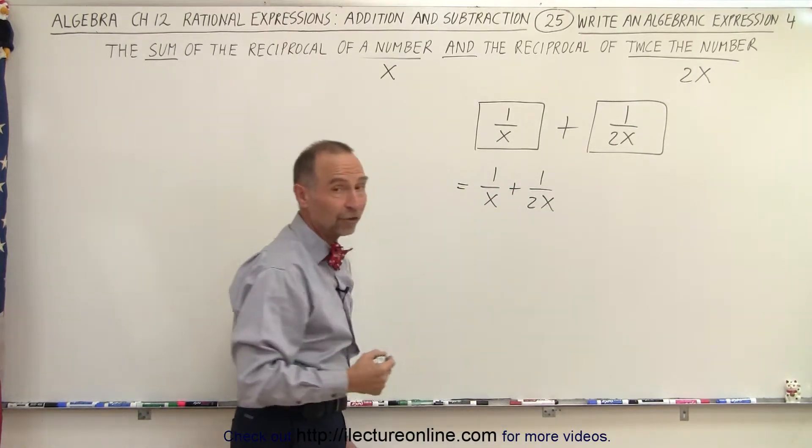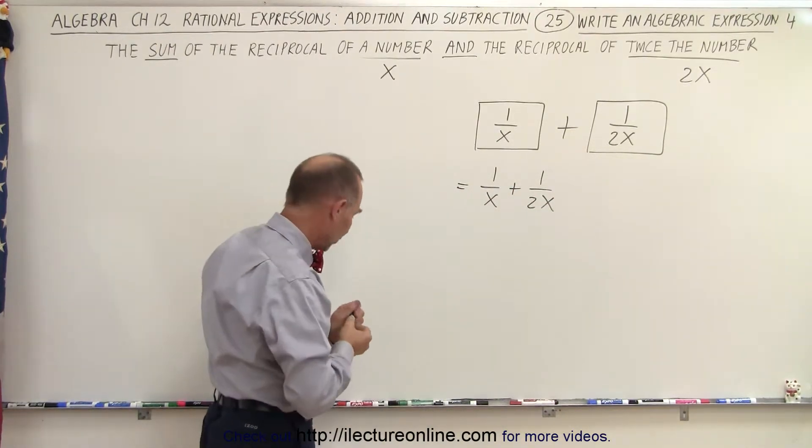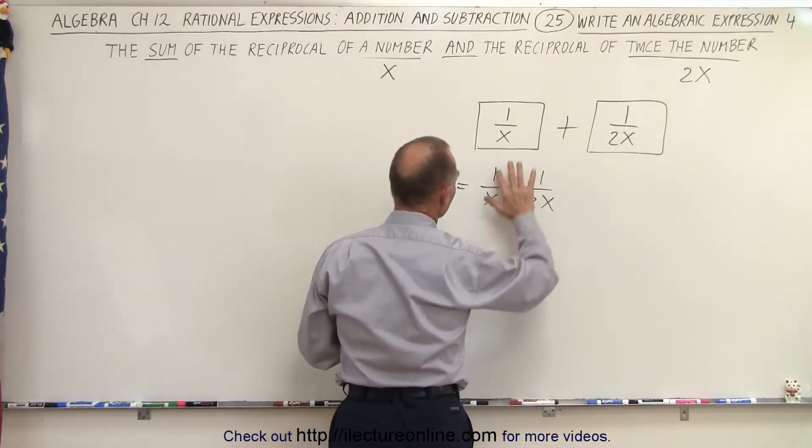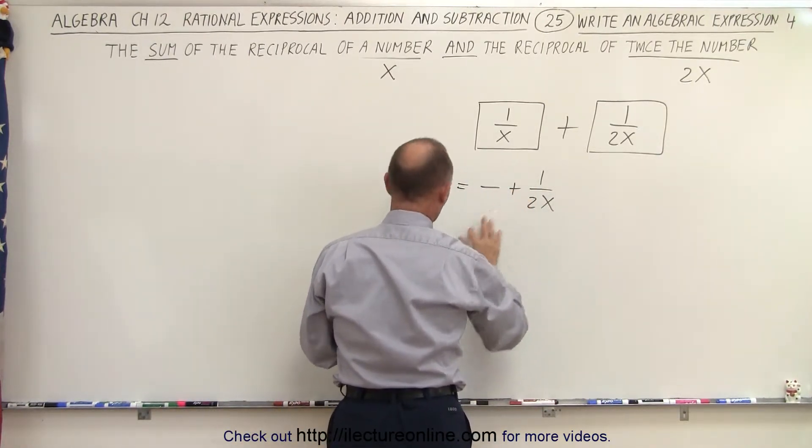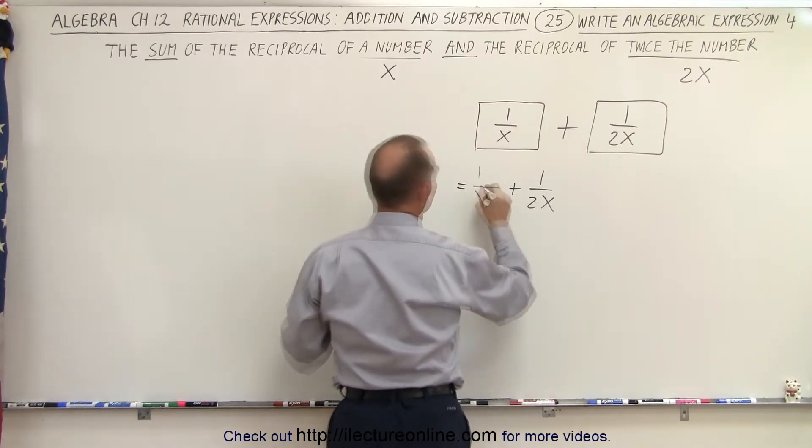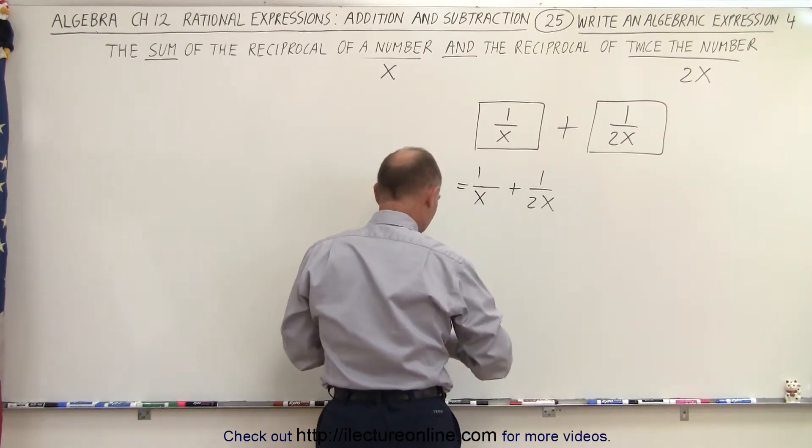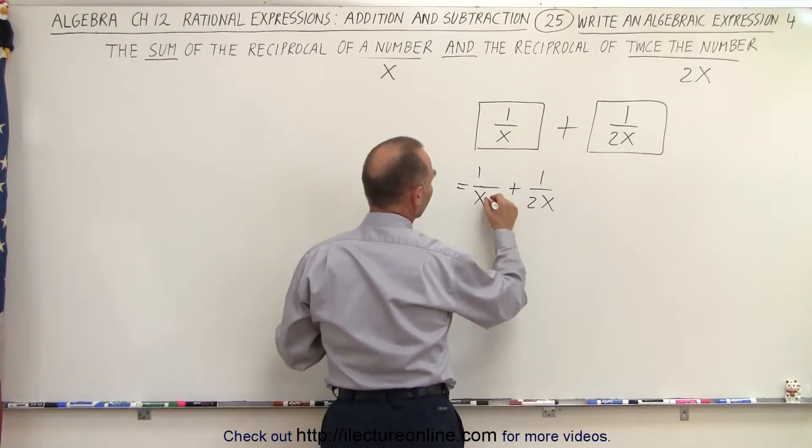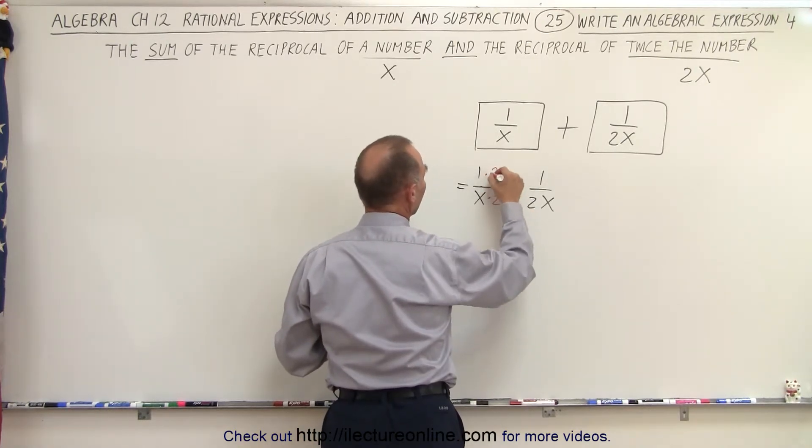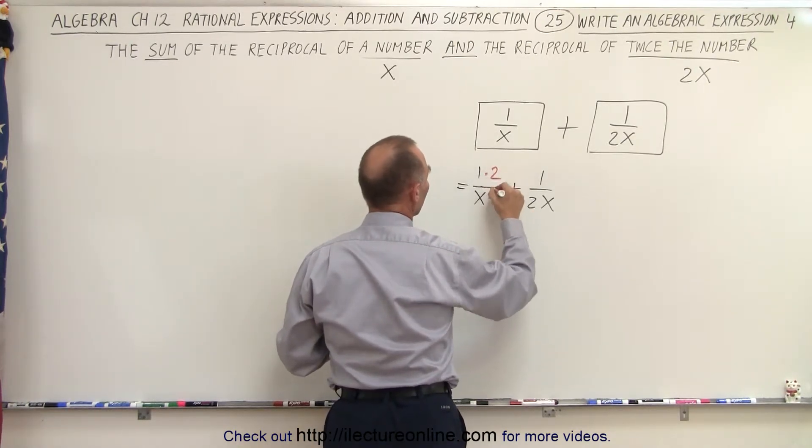Now, in order for us to add those two rational expressions, we're going to have to multiply. And let me rewrite this just a little bit so we have a little bit more room. 1 over x. We're going to multiply the denominator by 2 because we want a 2x here. And of course we have to multiply the numerator by 2 as well.